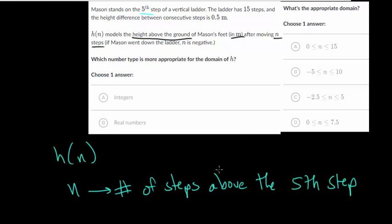So another way to define it is n is how many steps Mason has moved up or down the ladder, where if he goes down, then the n value is negative. So h(n), that's going to deal with the height above the ground, and that's going to be in meters.